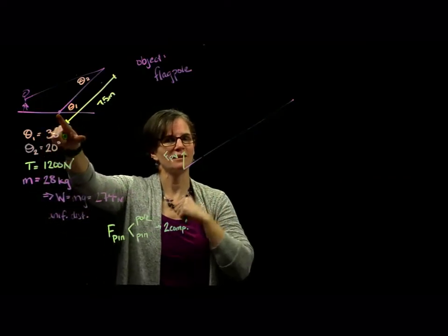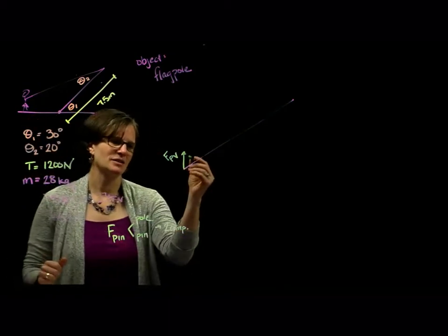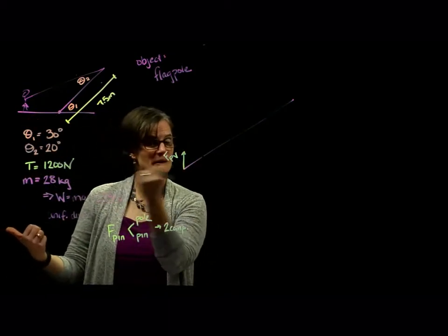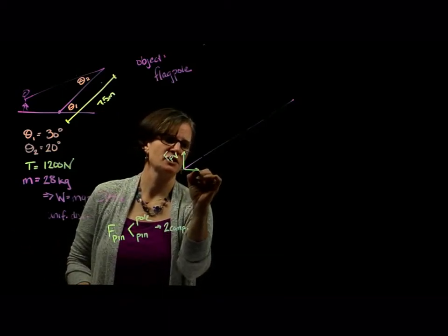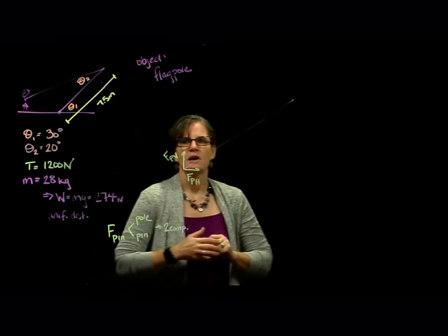So here's the force of the pin vertical. Similarly, if that pin suddenly got pulled out, the pole would move in that direction, and so the pin must be pushing it in the opposite direction. Here's the force of the pin horizontal.